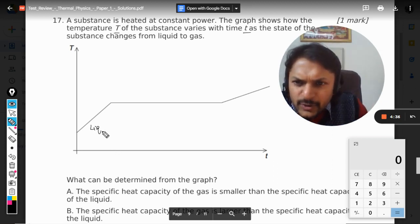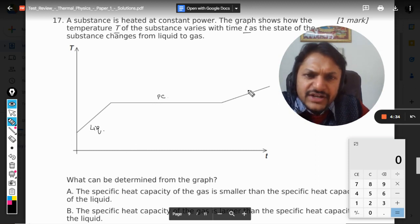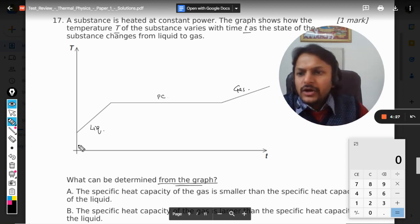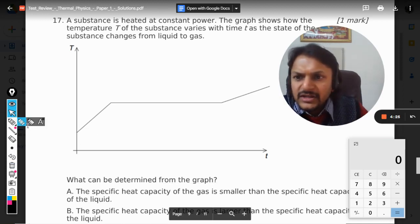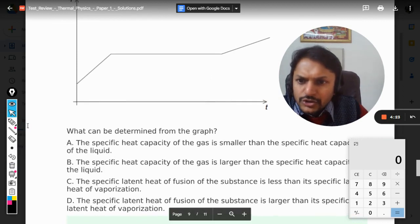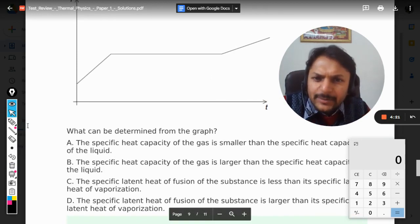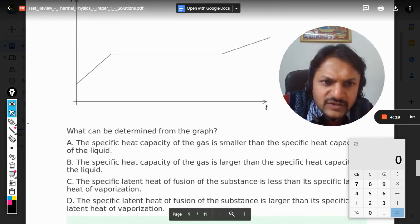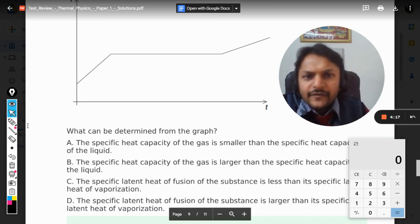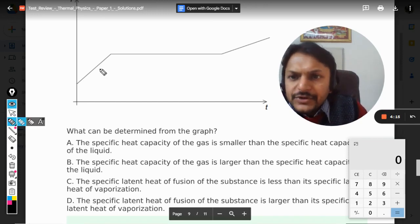So this is liquid, this is phase change, and this becomes gas. What can be determined from the graph? Fine. For that, we need to read the options now. The options are: the specific heat capacity of the gas is smaller than the specific heat capacity of liquid.